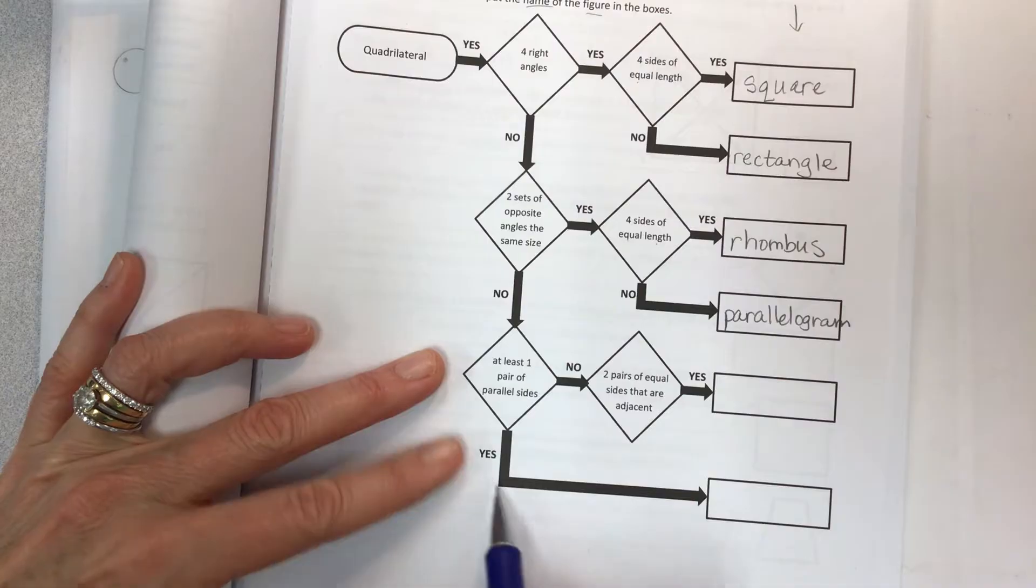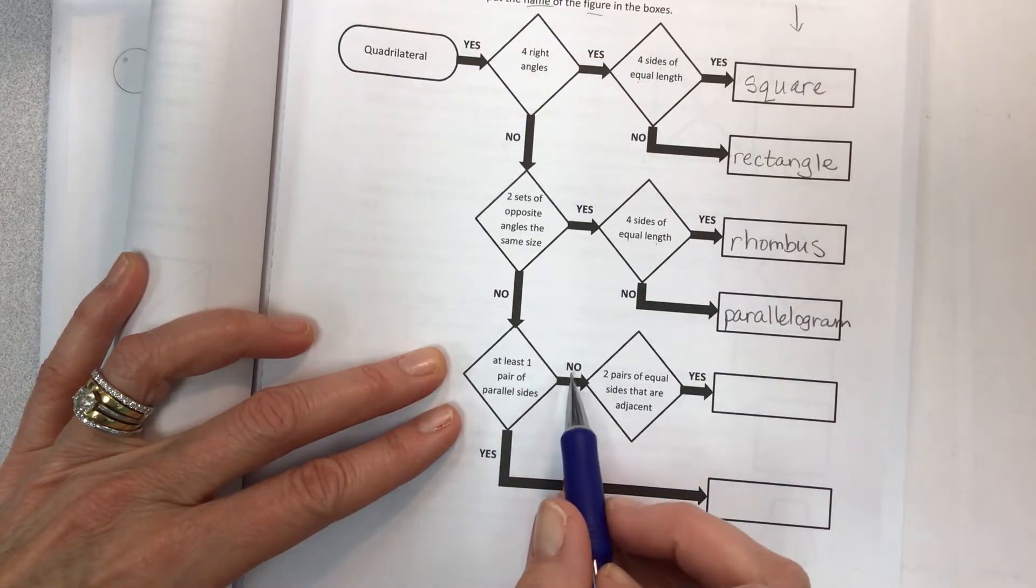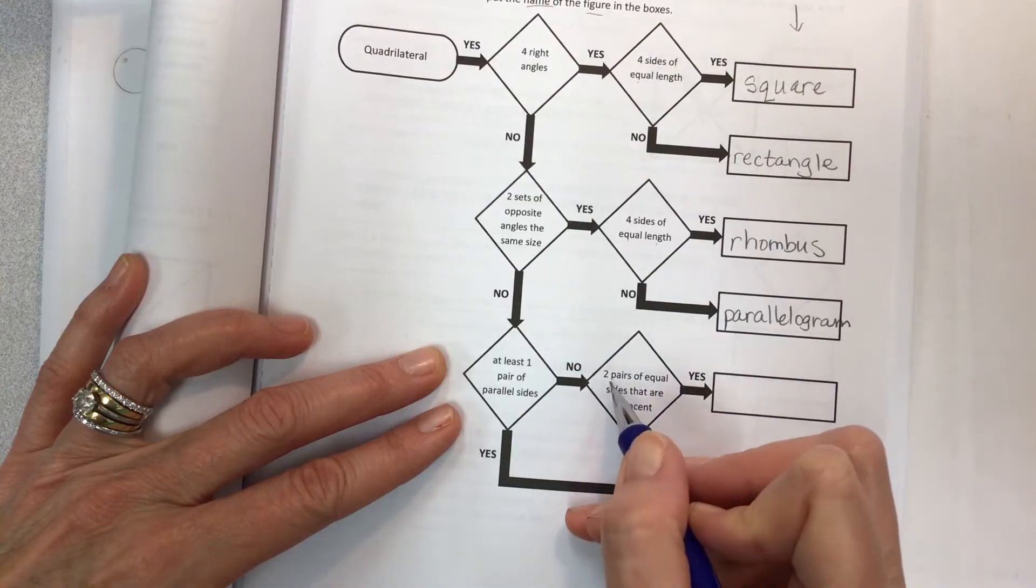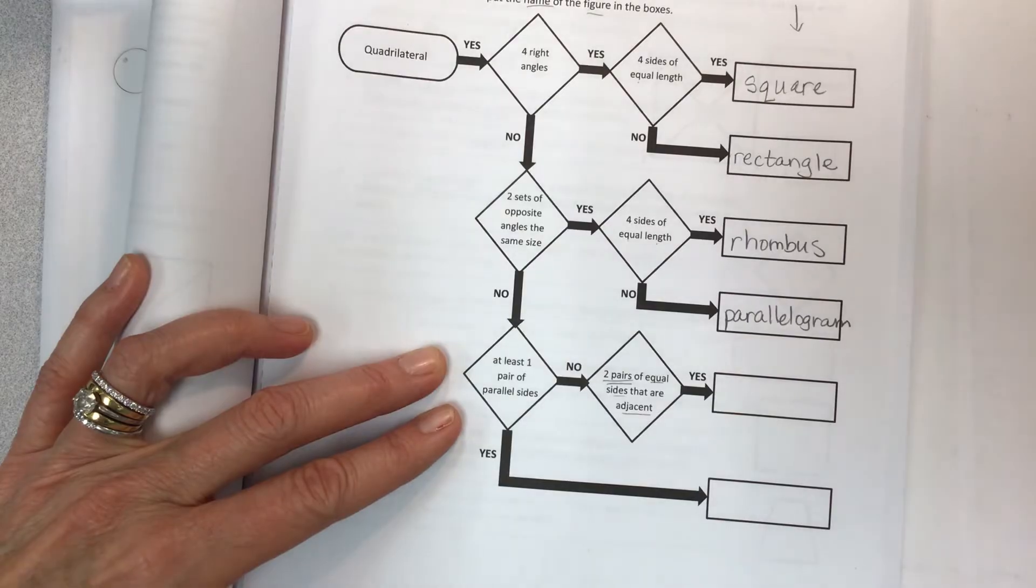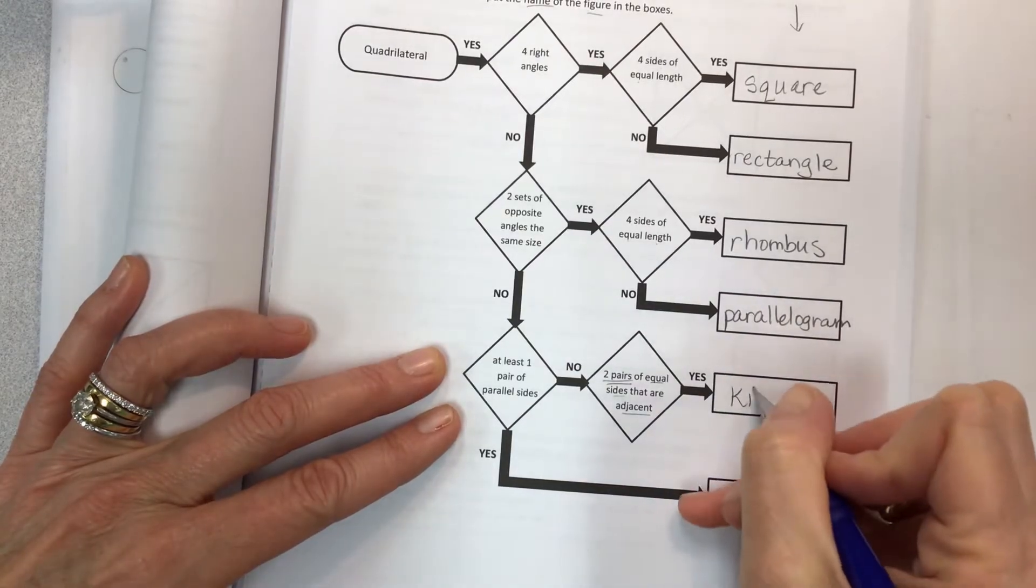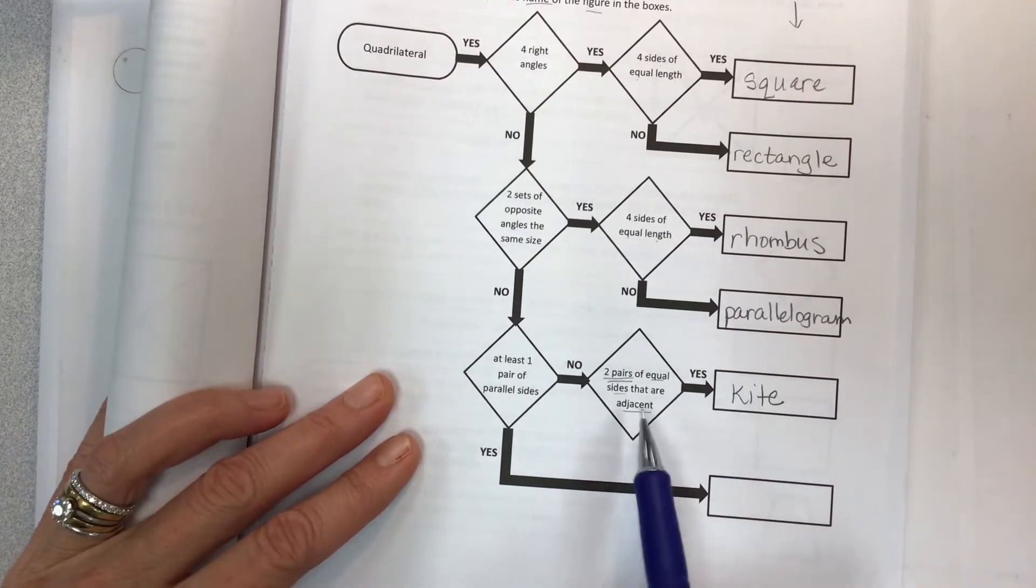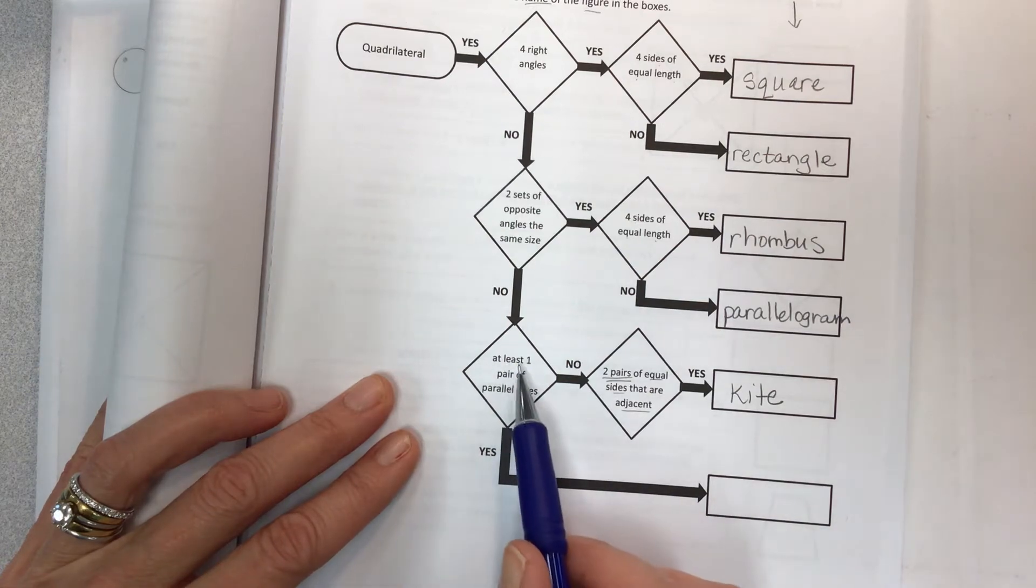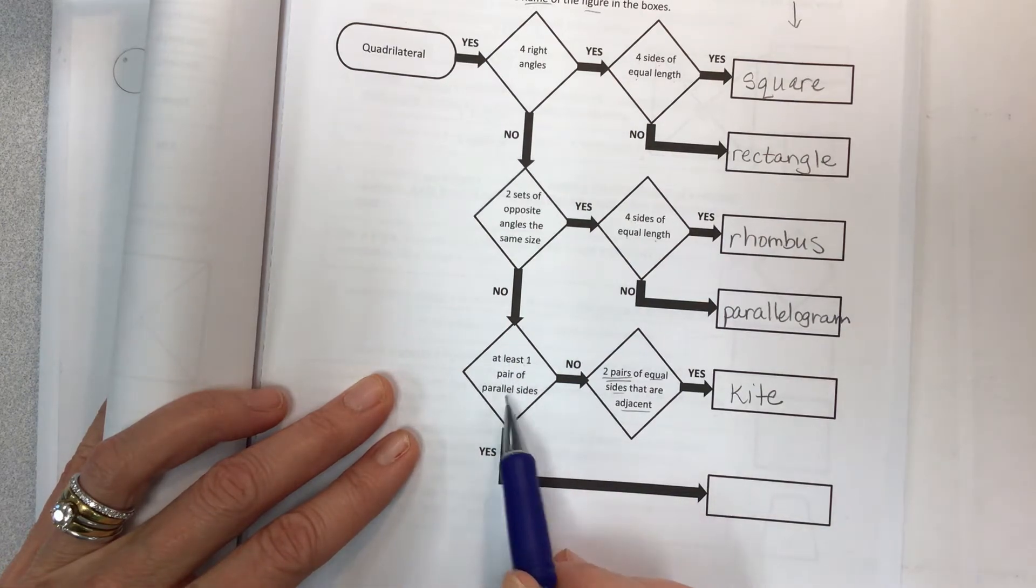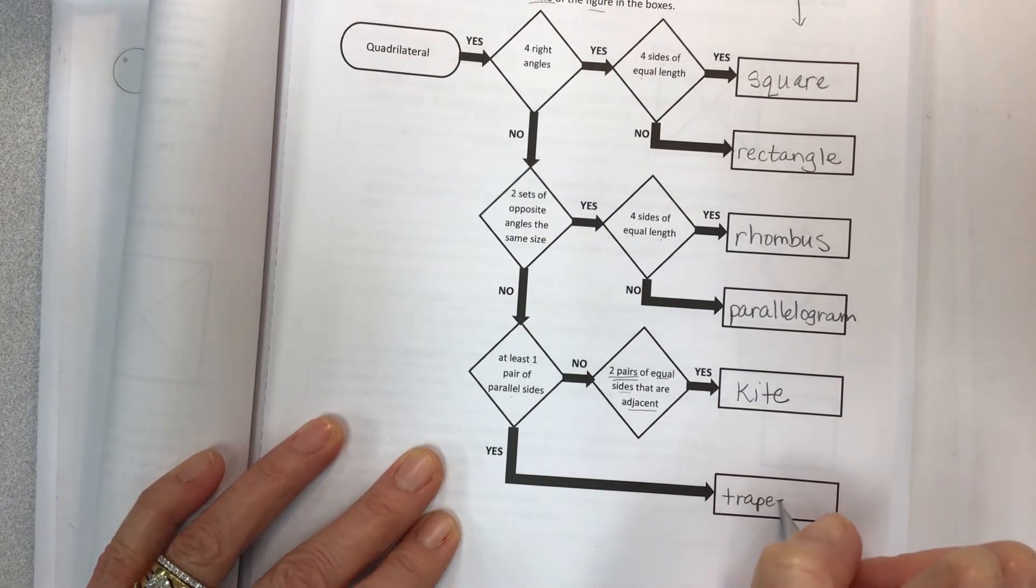And so we're not worried about those opposite angles being the same. And we do have at least one pair of parallel sides—oops I'm jumping ahead. If we don't have at least one pair of parallel sides but we do have two pairs of equal sides that are adjacent, that's that new shape. That's your kite. That's the Johnny-come-lately, the last one that we've talked about. Now if we do have at least one pair of parallel sides, that's when you're talking about the trapezoid.